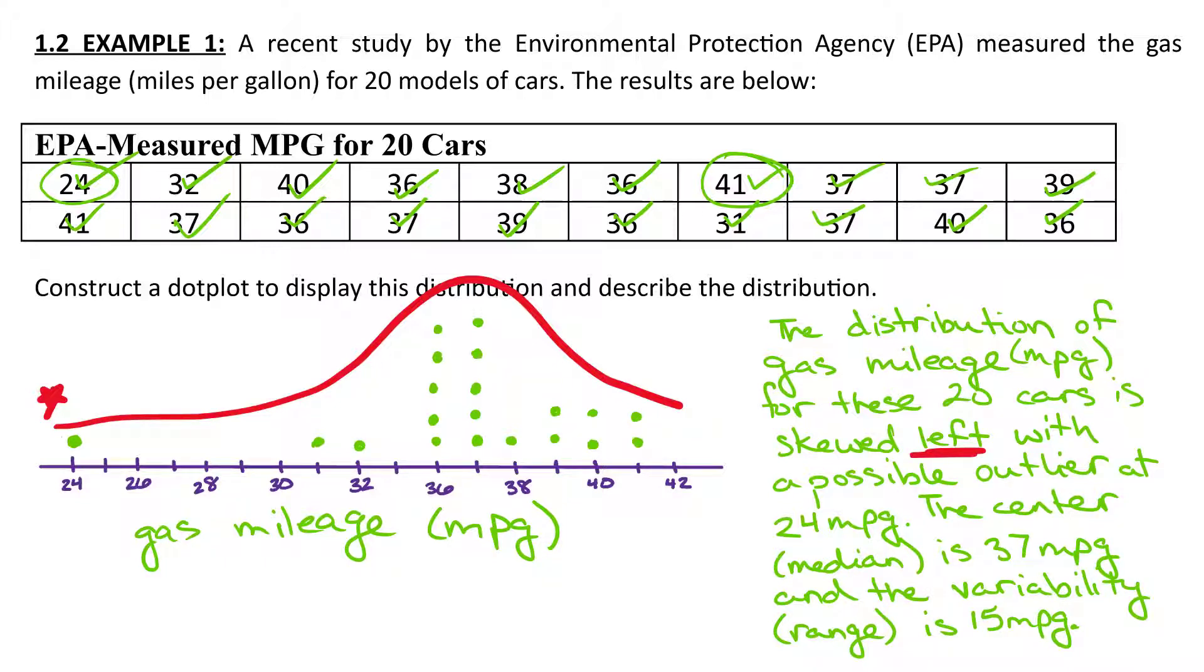The outlier down here at the end, we're not sure exactly, but that's pretty far out. So there's a big gap. And that's fair to assume that's an outlier. But later, we're going to learn a formula. So you'll be able to say with certainty, yes, it is, or no, it's not.